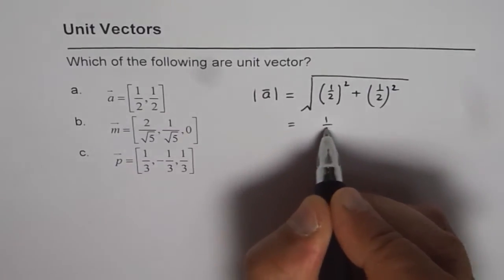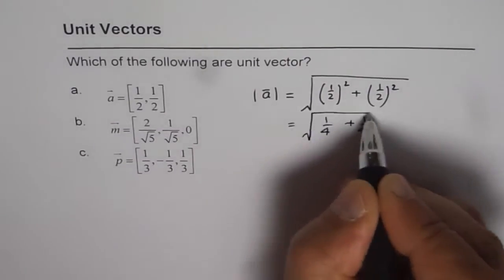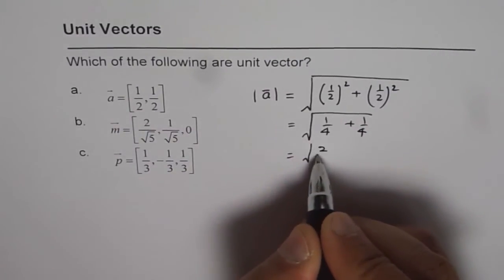That is equals to 1 over 4 plus 1 over 4 square root, which is square root of 2 over 4.